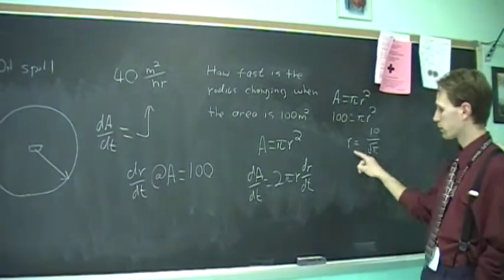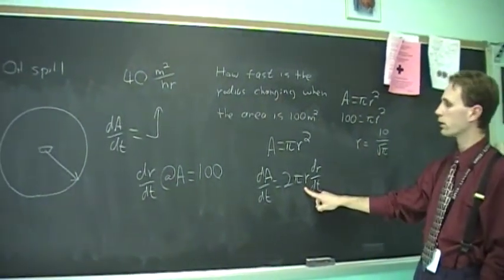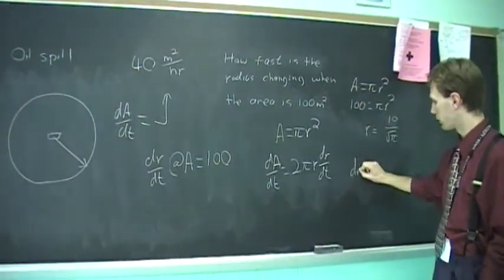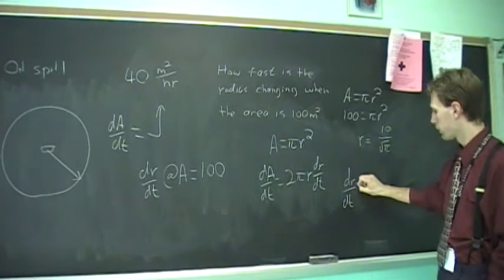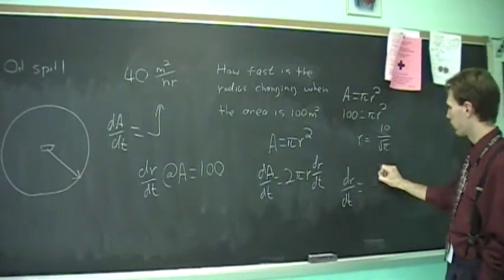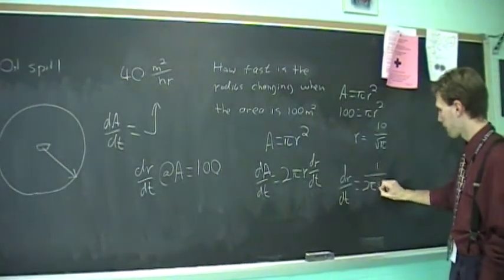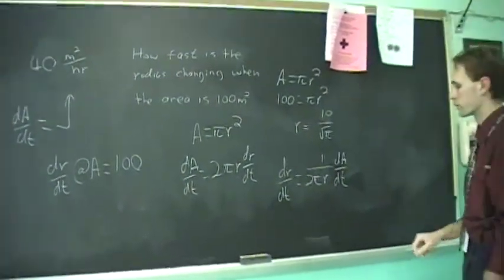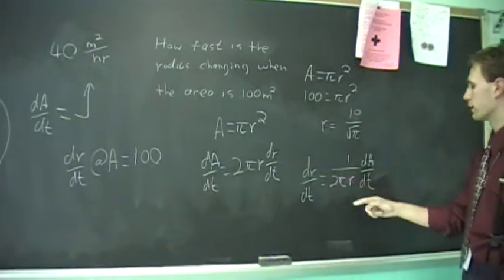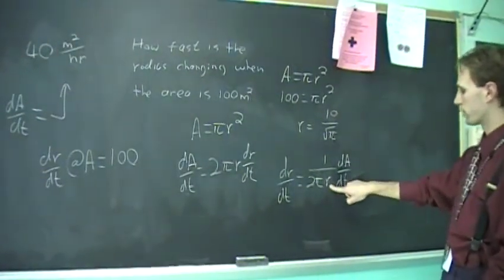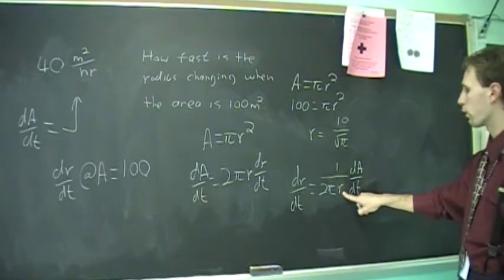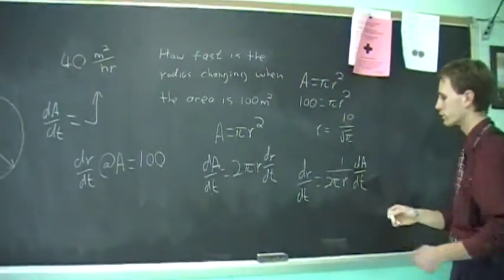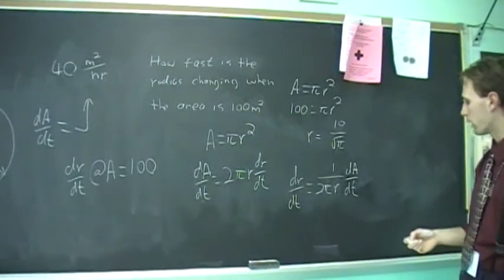So take that, plug it in. Since we ultimately want dr/dt, we may as well solve for it here. And you get dr/dt equals 1 over 2πr, which shows that the rate of change of the radius is inversely proportional to whatever r is. As r increases, the rate of change of the radius is going to decrease.